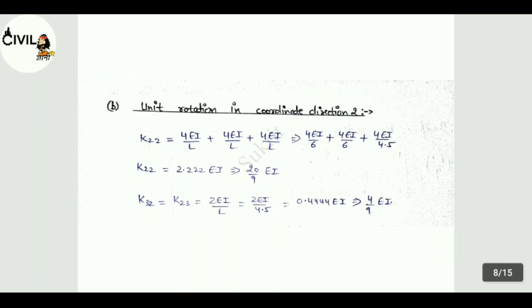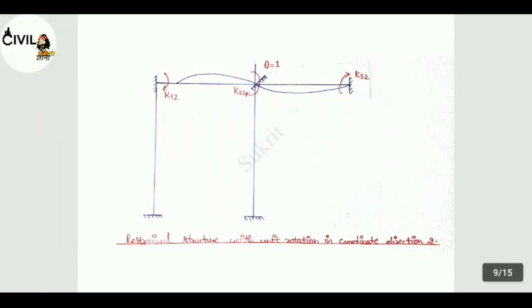Now K32 equals K23 that is 4/9 EI. Now see the diagram. This is your restrained structure with unit rotation in coordinate direction 2. This gives values of K12, K22 and K32.